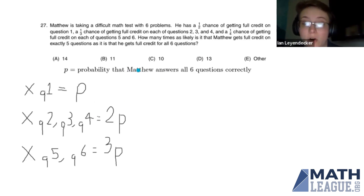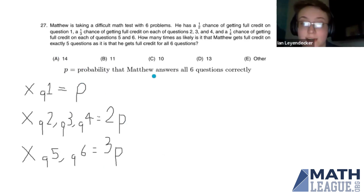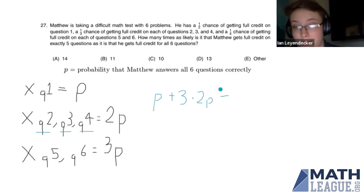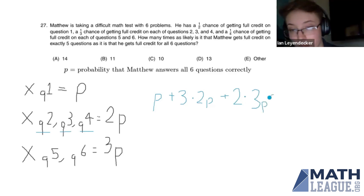Now we have the increase in probability that Matthew gets five questions correct and one question incorrect over the probability of getting all six correct. We combine these terms, already expressed in p: p (question one wrong) plus three times two p (for questions two, three, and four — three cases) plus two times three p (for questions five and six — two cases). That gives us p plus 6p plus 6p, which equals thirteen p.